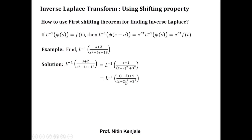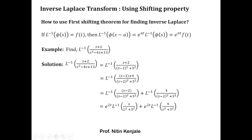To find its inverse Laplace, we separate the numerator over the denominator to get L⁻¹{(s − 2) / [(s − 2)² + 3²]} + L⁻¹{4 / [(s − 2)² + 3²]}. Applying the first shifting theorem in reverse, the first term becomes e^(2t) · L⁻¹{s / (s² + 3²)}, and the second term becomes e^(2t) · L⁻¹{4 / (s² + 3²)}.